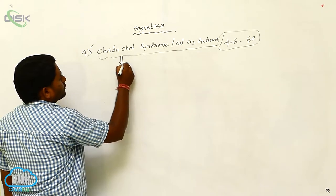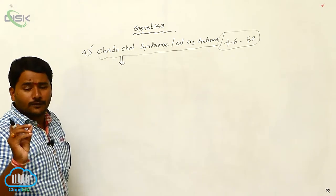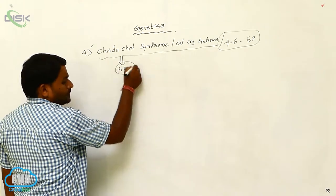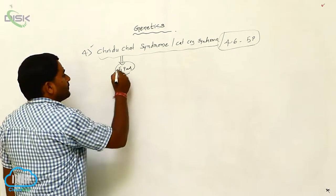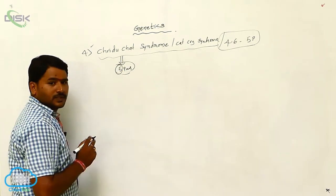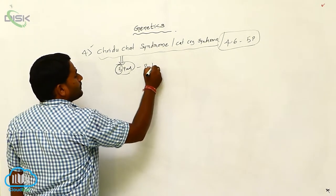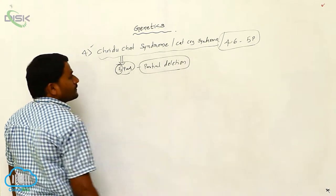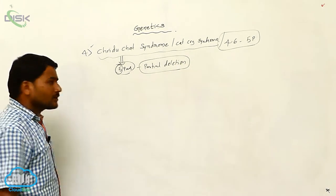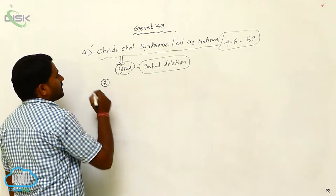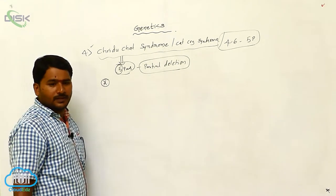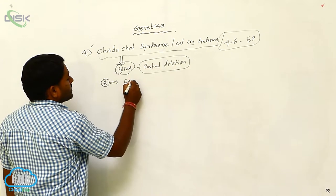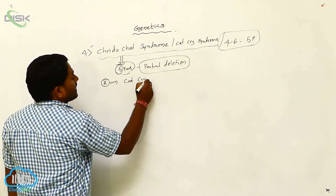Cri-du-chat syndrome is characterized by the loss of a chromatid arm from the fifth pair chromosome — this is called a partial deletion of the fifth pair chromosome. Because of this deletion, the individual produces sounds like a cat cry.